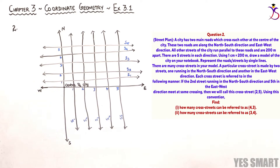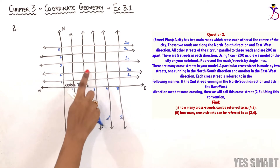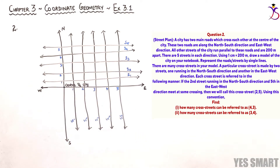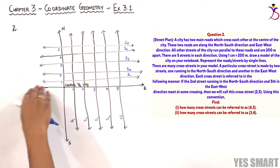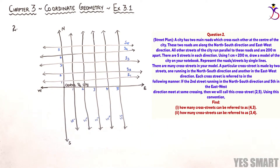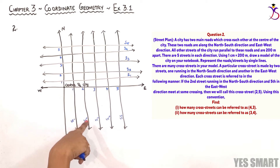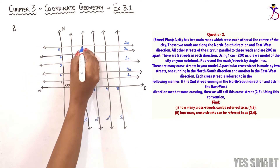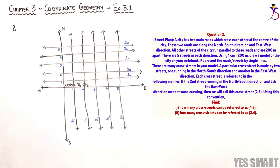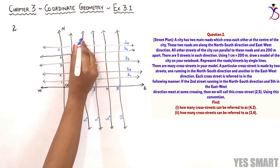There are many cross streets in our model. Each and every intersecting point is a cross street. A cross street is formed when two streets meet — one in the north-south direction and the other in the east-west direction. Each cross street is referred to in the following manner: if it is the second street running north-south and the fifth street running east-west, that particular cross street is referred to as (2, 5).